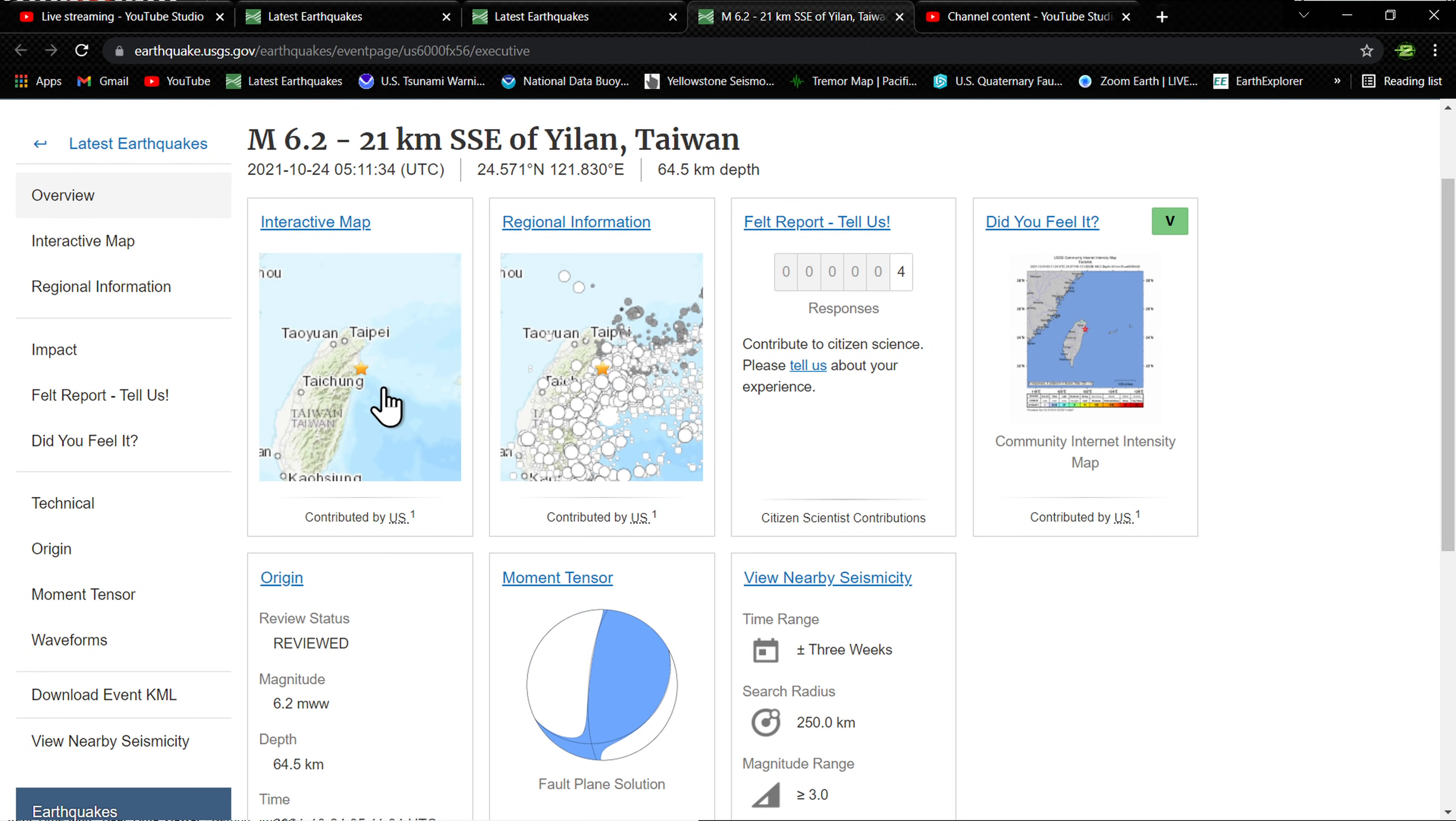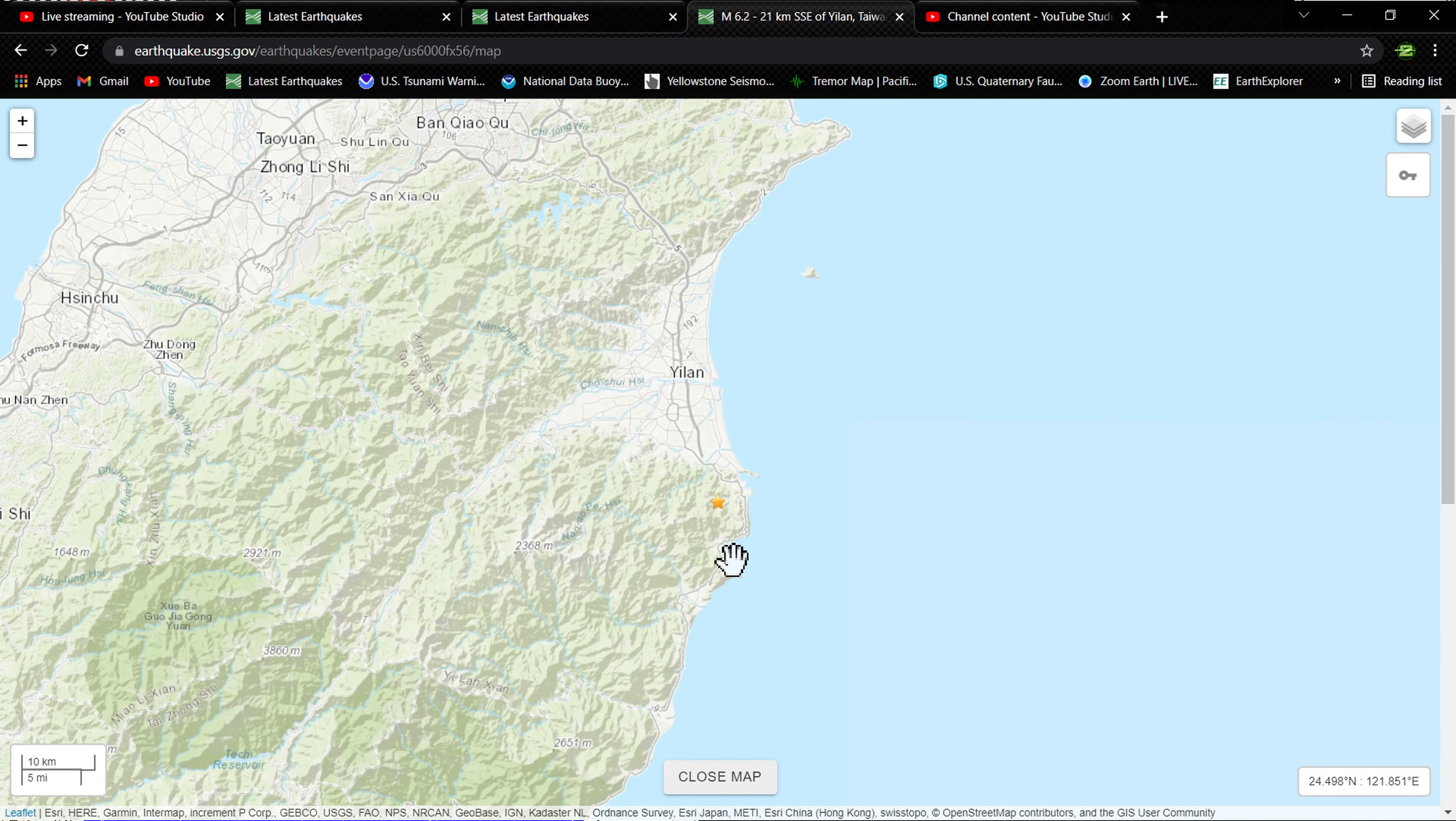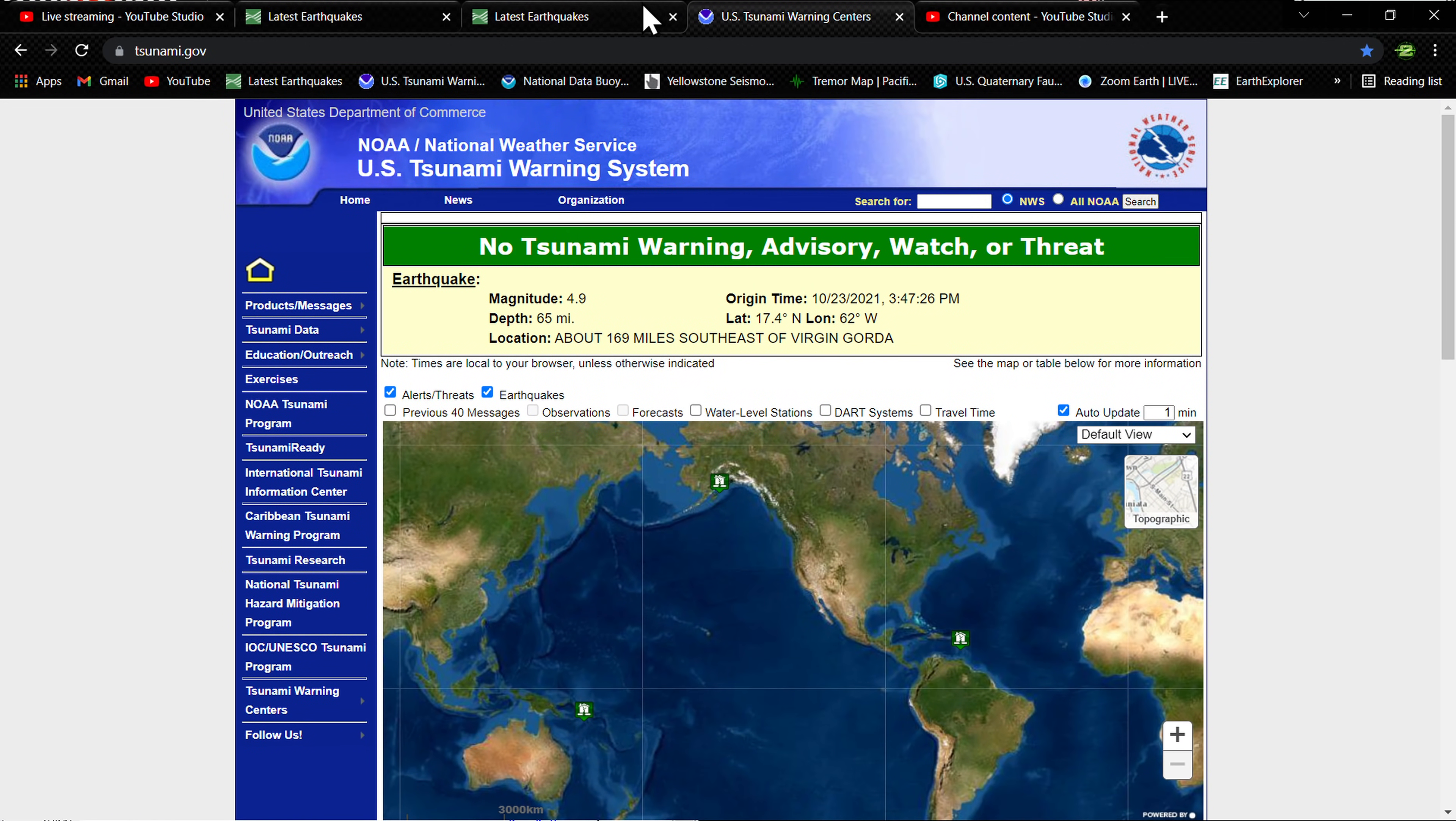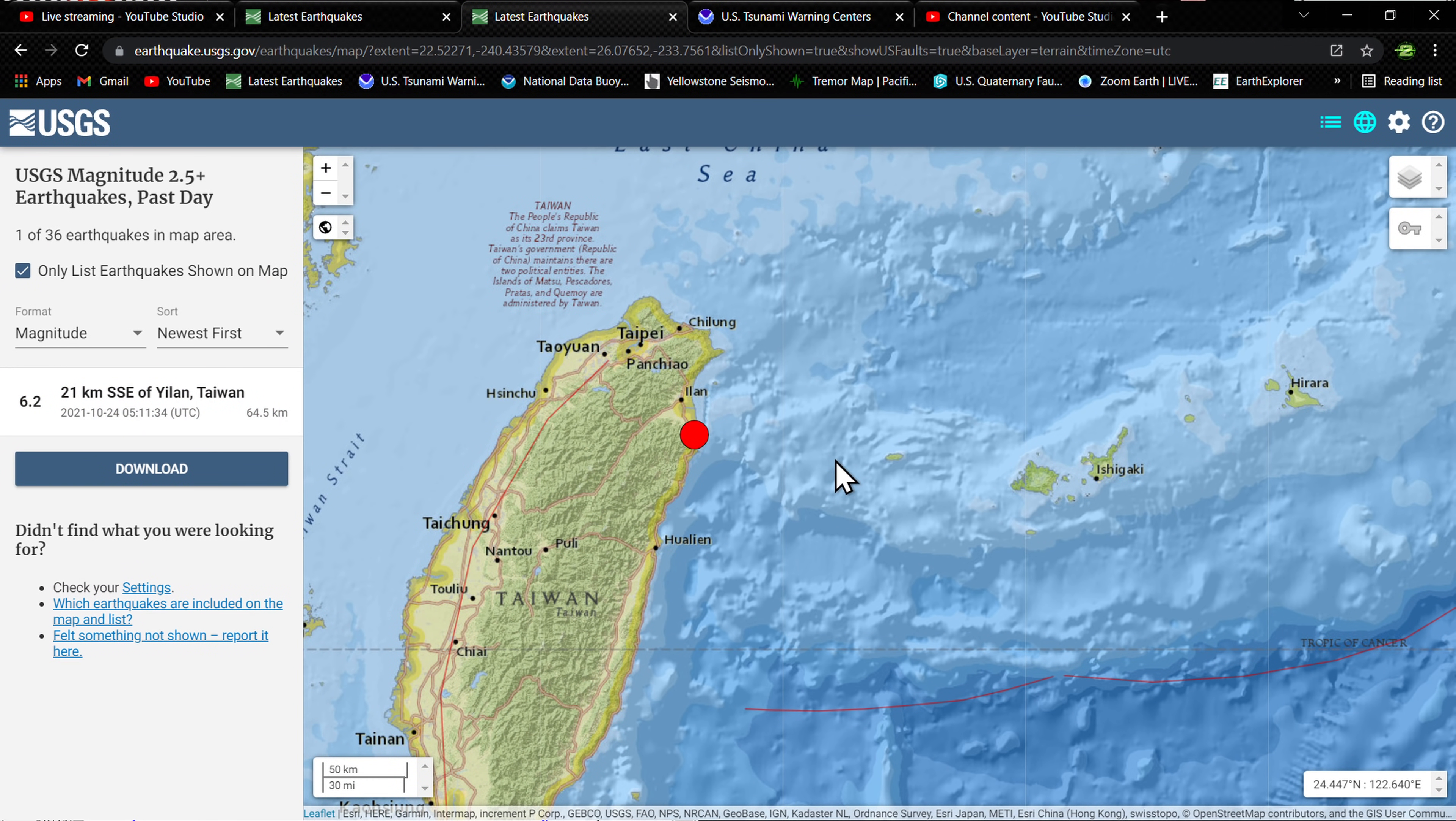This did take place, it looks like, just offshore. Actually, it looks like it is on land on this map here with the star as the epicenter for that 6.2 earthquake. So, no tsunami statement, no major damage, hopefully, from this earthquake. Once again, a 6.2 earthquake striking the Taiwan region just a short time ago.